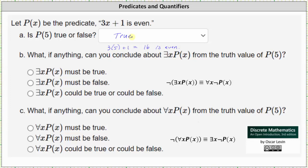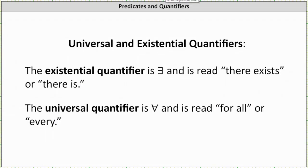Before we take a look at parts b and c, let's review mathematical quantifiers. First, the existential quantifier is the symbol shown here, which looks like a capital E facing the wrong direction and is read there exists or there is.